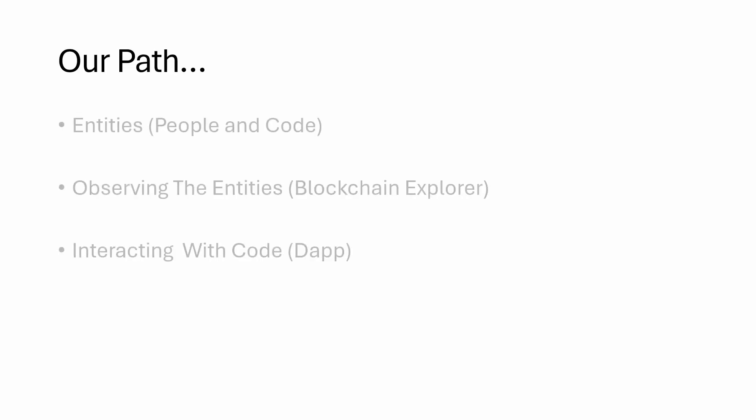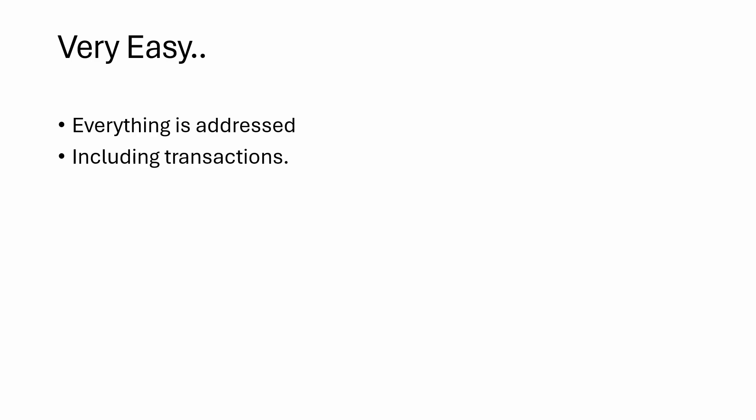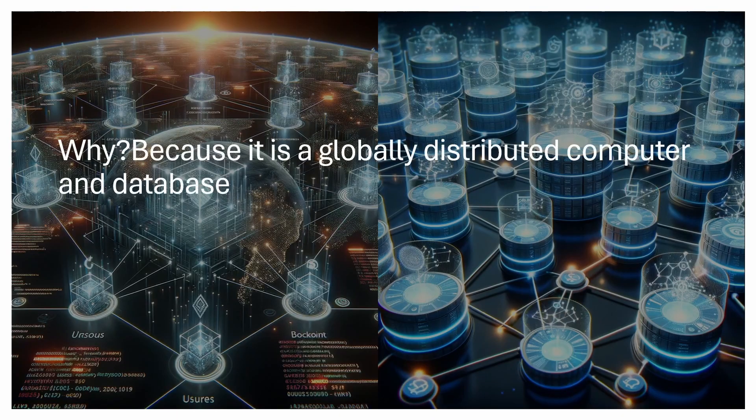We will see how to navigate blockchain. We will be seeing the people or human entities and code involved in blockchain, and how we can observe these entities and interact with code using a DApp. This process is very easy because all entities are addressed — even transactions — because blockchain is a globally distributed computer and database. Everything and any event should be uniquely addressable so that it can be tracked. So what are the different types of addresses in the blockchain?